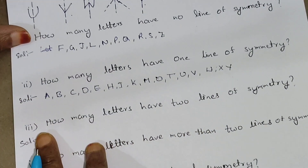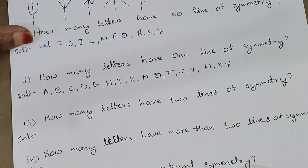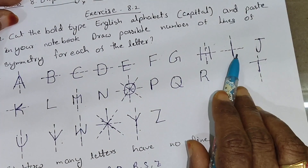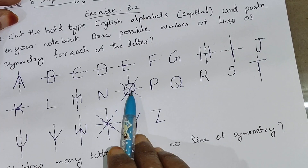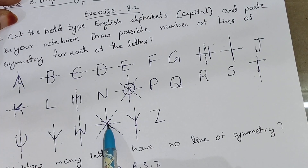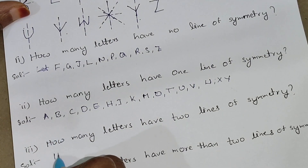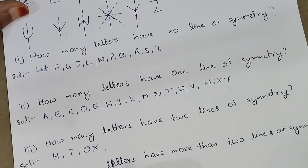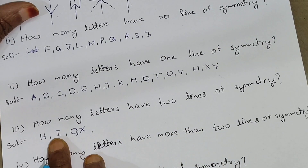Third sub-question: how many letters have two line symmetry? H has two lines, I has two lines, O also has two lines, and X also has two line symmetry. So H, I, O, X are the four letters with two line symmetry.